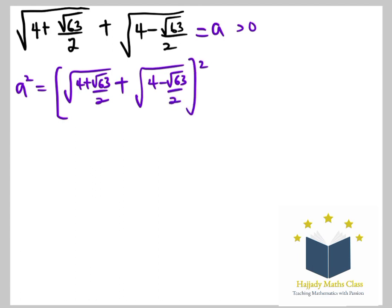And don't forget that when you have X plus Y all squared, it's the same thing as X squared plus Y squared plus 2XY. So I'm going to assume this is my X while this is my Y. So using the same approach.